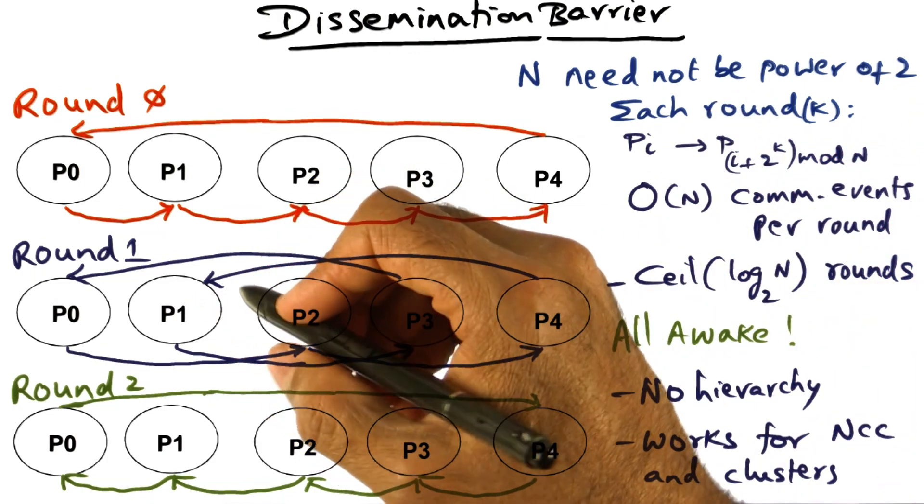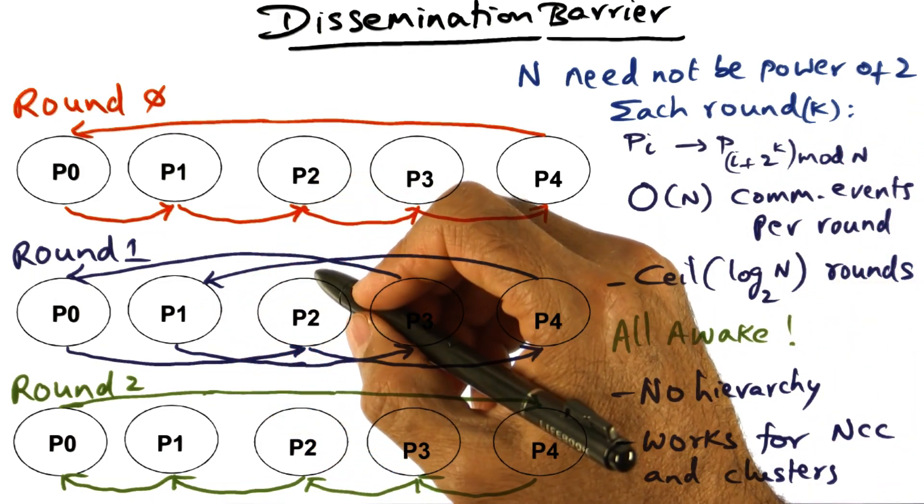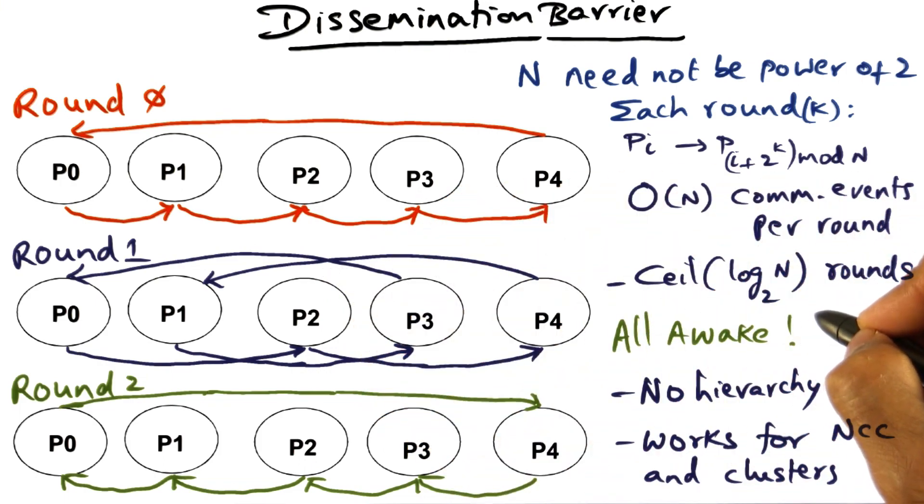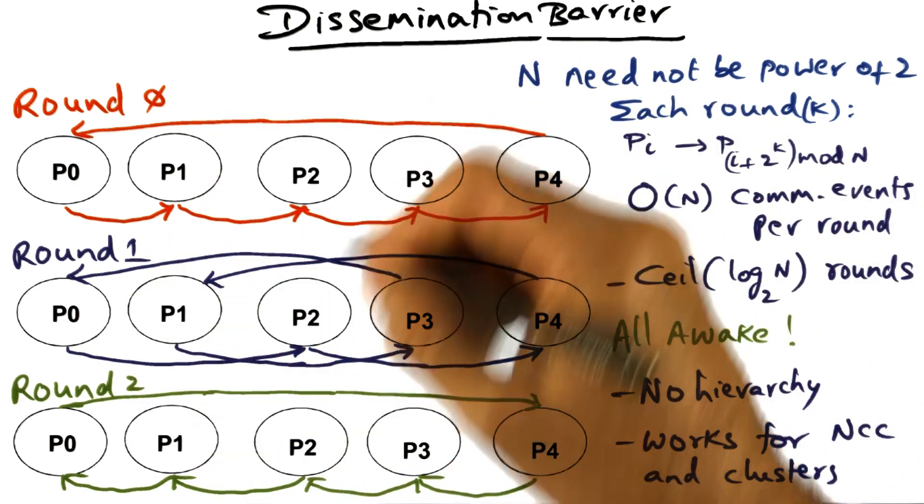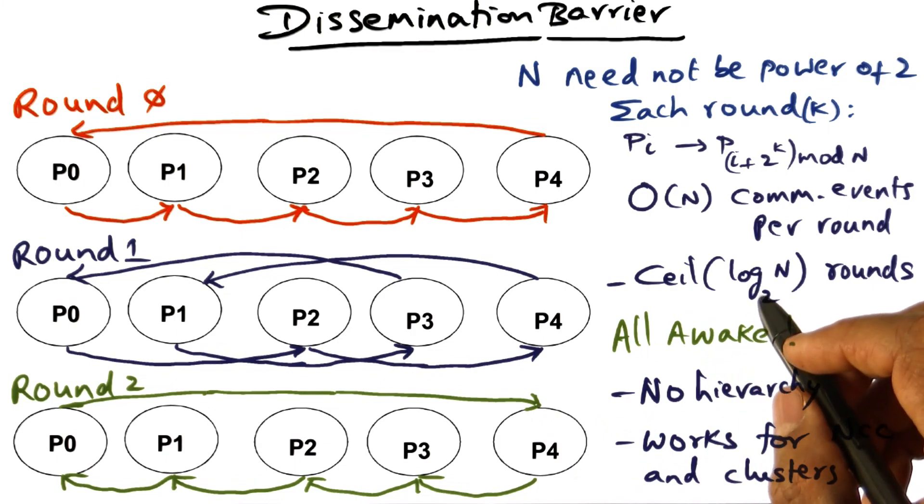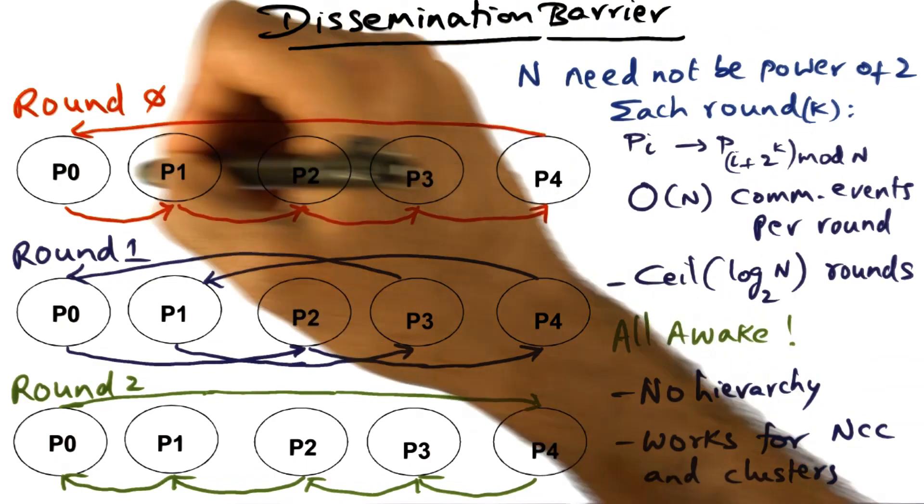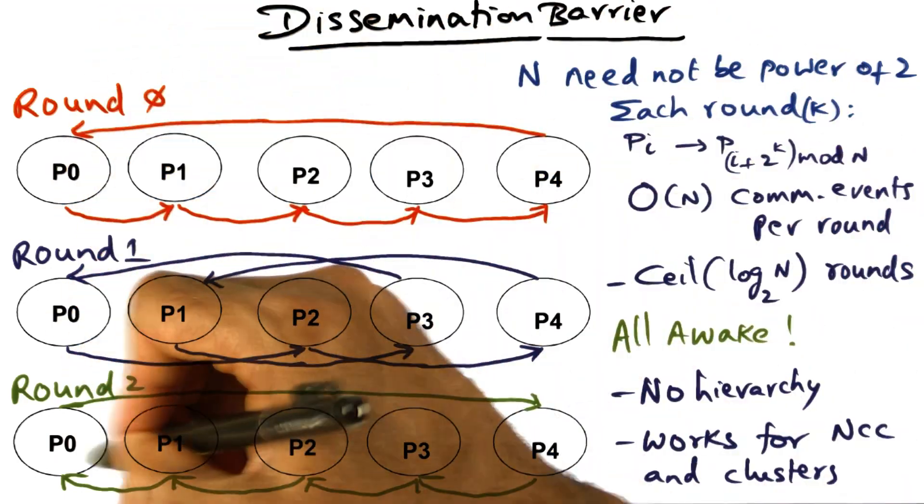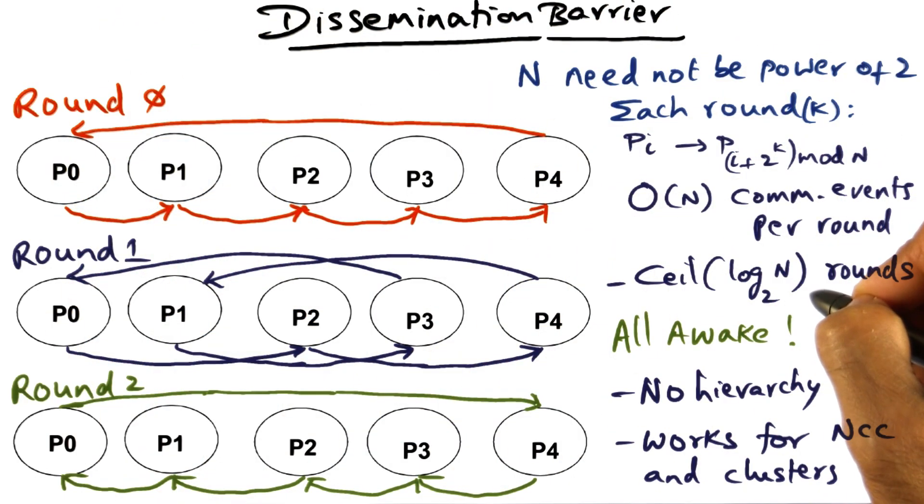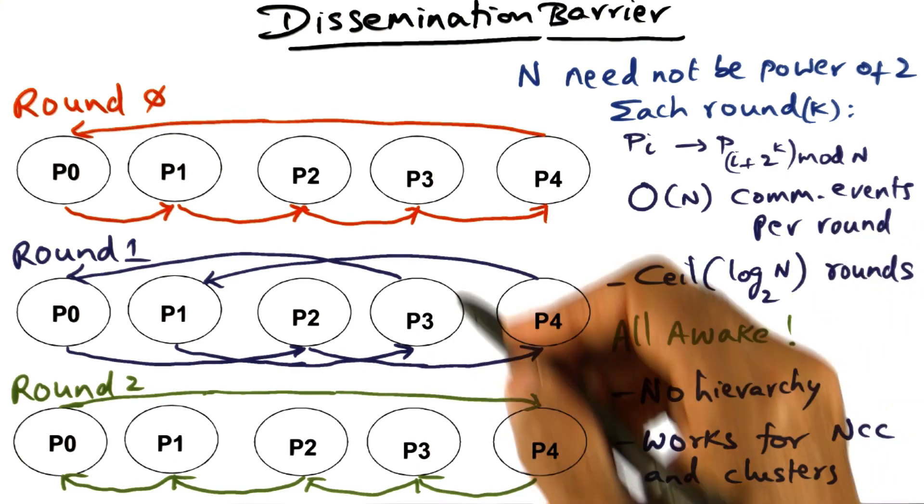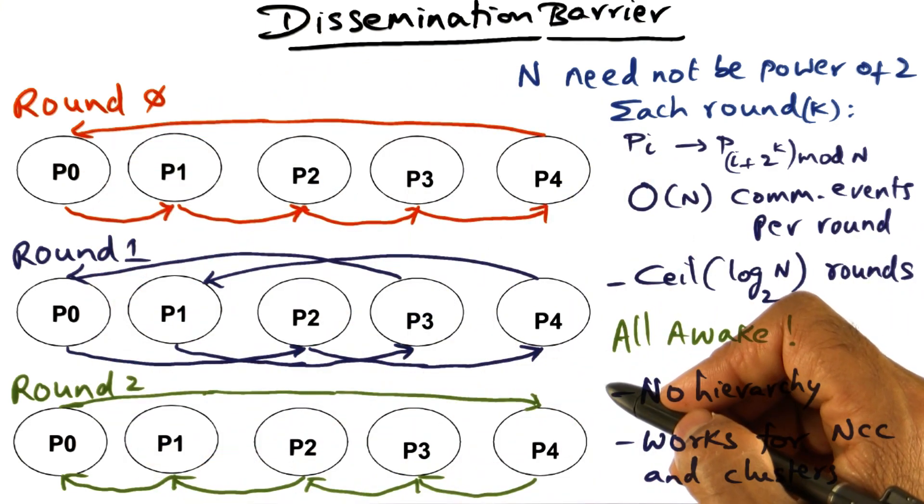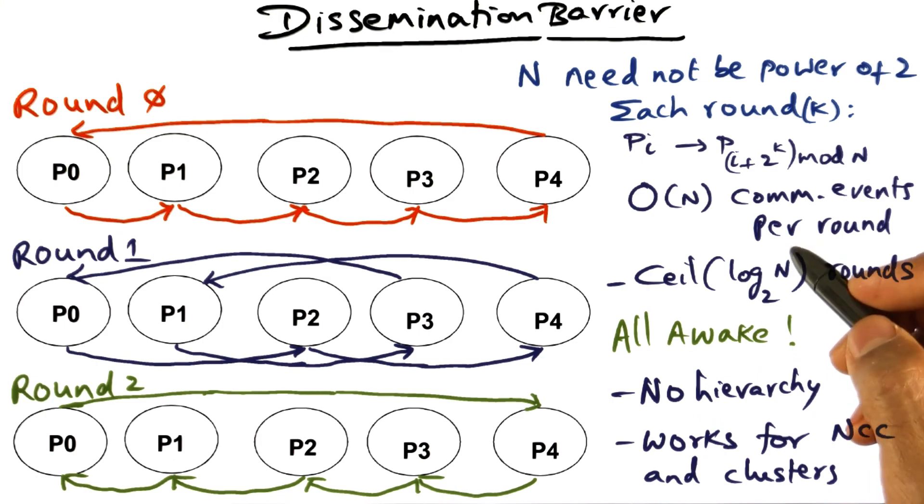And all the processors will realize that the barrier is complete when they have received ceiling log n messages in the entire structure of this algorithm. So if you think about the total amount of communication, because the communication in every round is fixed, it's n messages in every round. And since there are ceiling log n rounds, the communication complexity of this algorithm is order n log n.